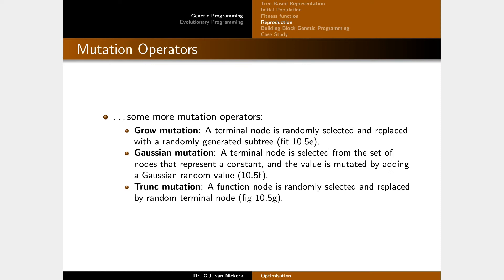There are a few more mutation types. Grow mutation randomly selects a terminal node and replaces it with a randomly generated subtree, increasing the tree size. This can be applied specifically when no further improvements can be made, allowing trees to grow for a number of iterations. Gaussian mutation similarly modifies a terminal node's value. Trunk mutation replaces a whole subtree with a randomly selected terminal node, decreasing the tree size.